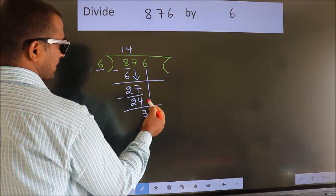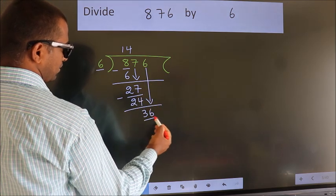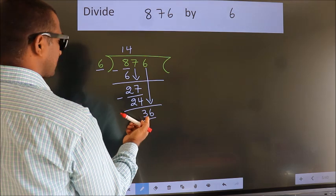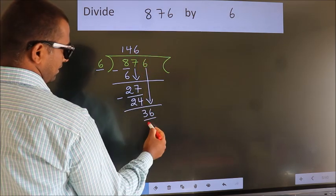bring down the beside number. So 6 down. So 36. When do we get 36? In 6 table. 6 6, 36.